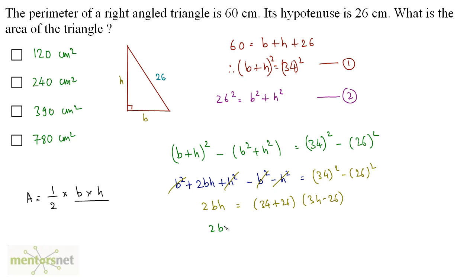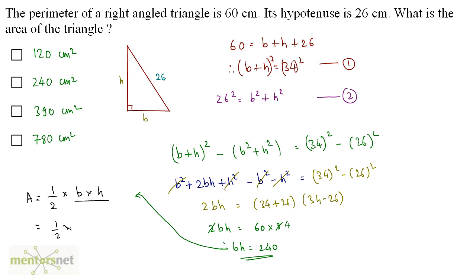So twice of bh equals 60 times 8, giving bh equals 240. The area equals half into bh, so half times 240 equals 120 centimeters square. Option A is the correct answer.